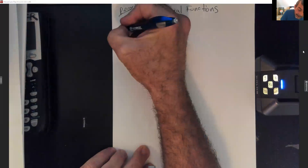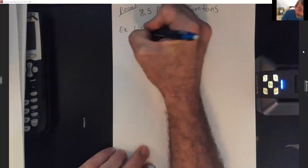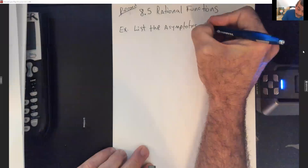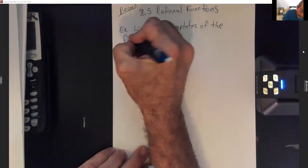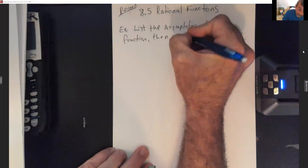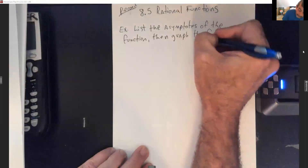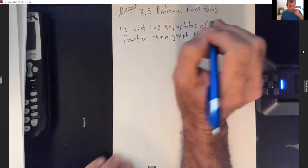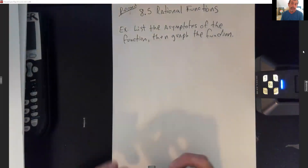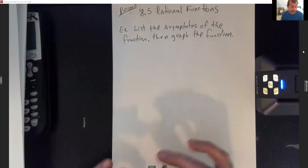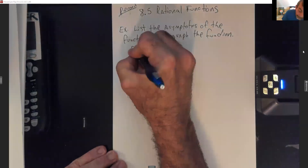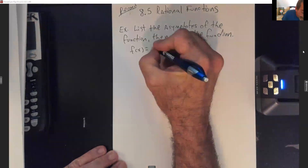On this example, they want us to list the asymptotes of the function and then graph the function. I'm just going to find my asymptotes and show y'all how to put these in on the calculators and adjust your windows so you can get the answers like they're getting. My function is going to be f(x) equals 5 divided by x squared minus 4.